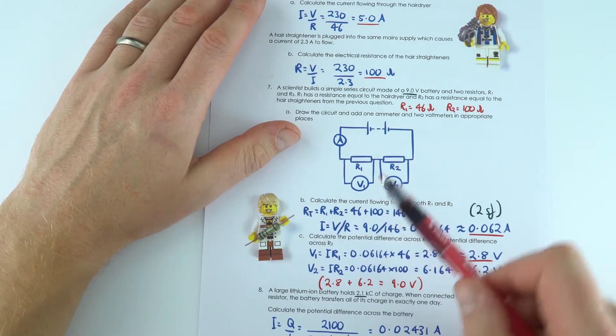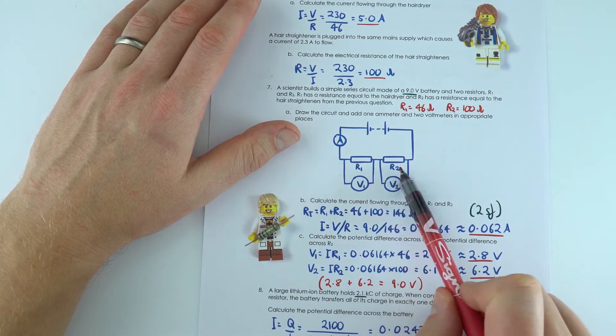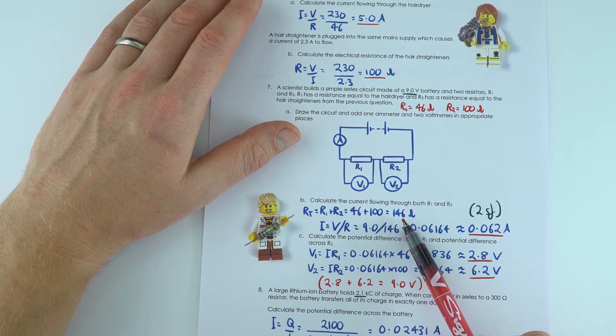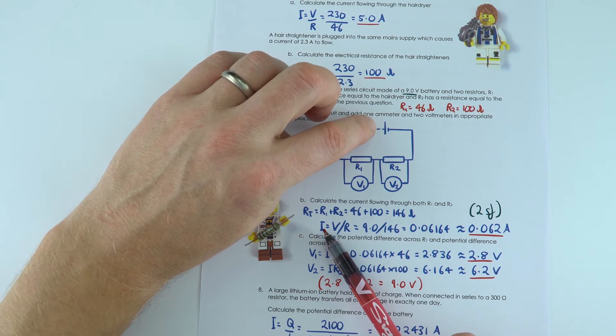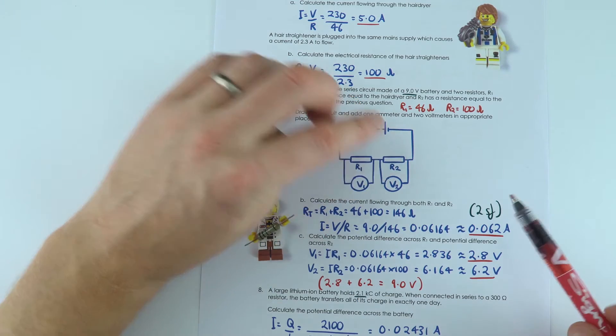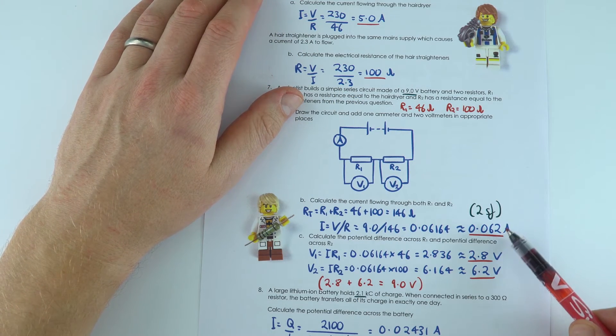So we've worked out the total resistance by just adding their individual resistances to find it's 146, and that means the current is going to be this potential difference divided by the resistance of that circuit, which was 0.062 amps.